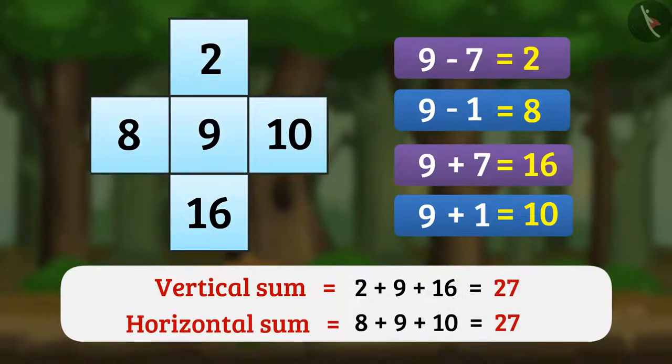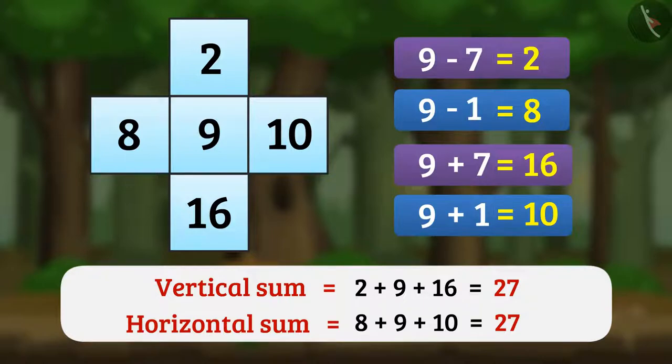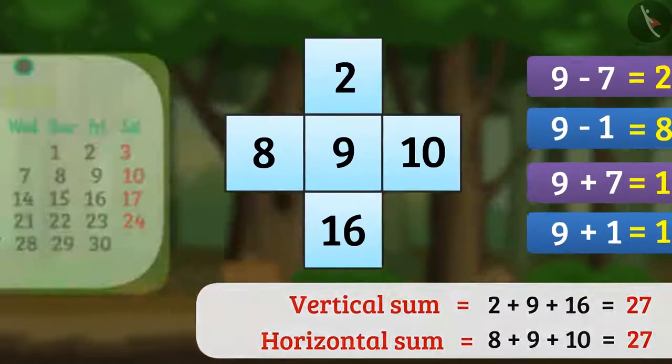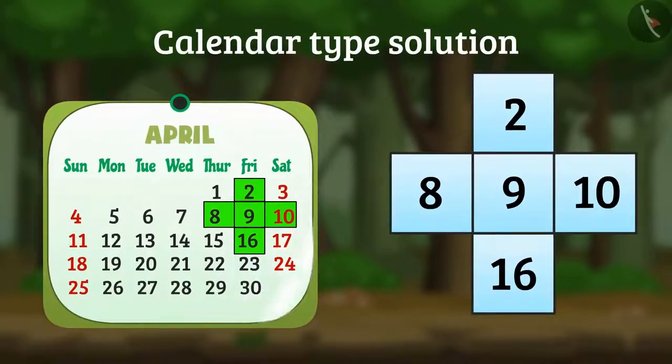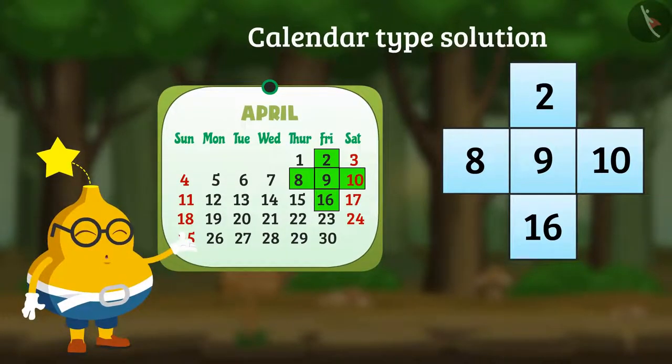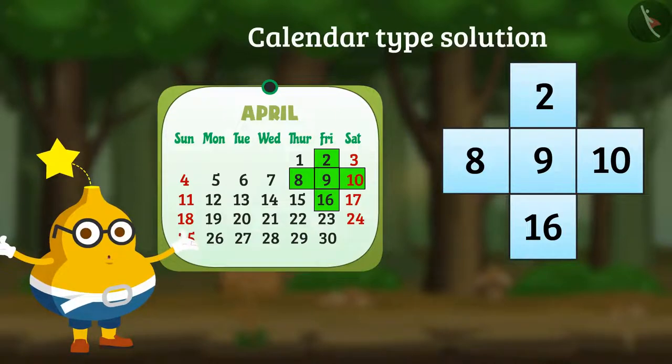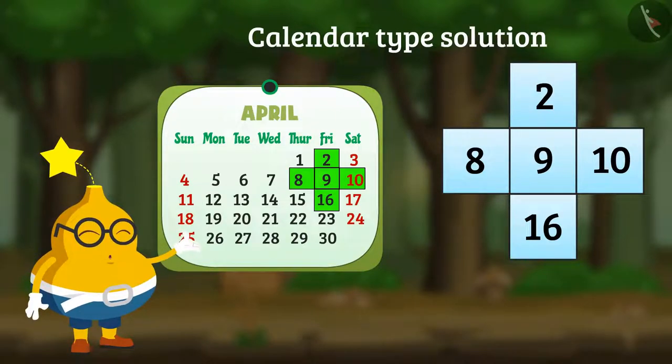Here, for adding and subtracting, I have used 7 and 1. That's why this is a calendar type solution. Let me tell you that once we find the central number, then we can use any convenient number to solve the third order puzzle.